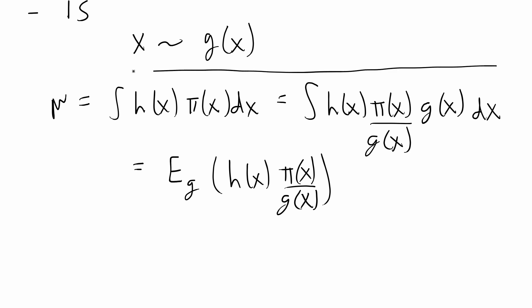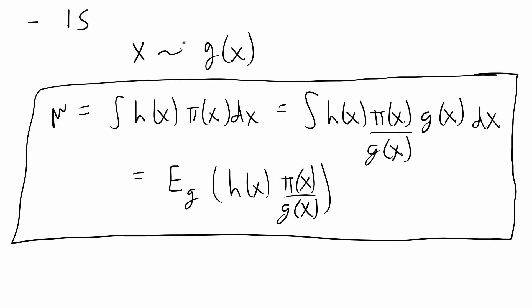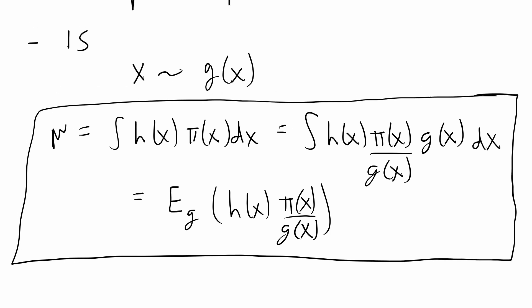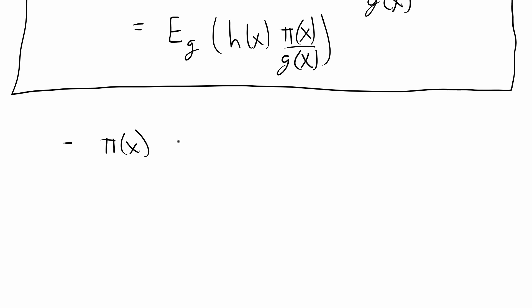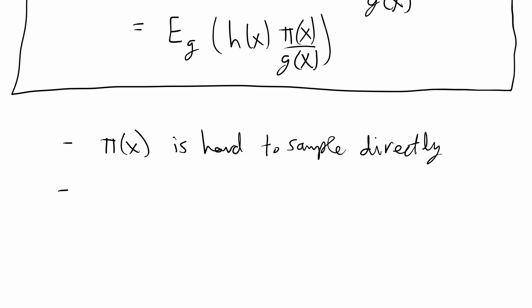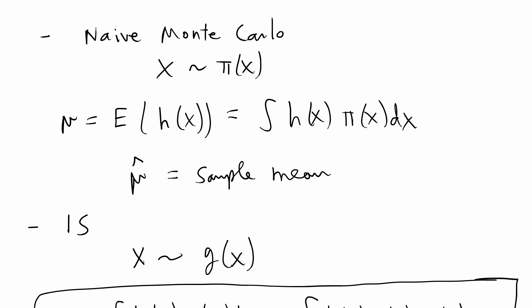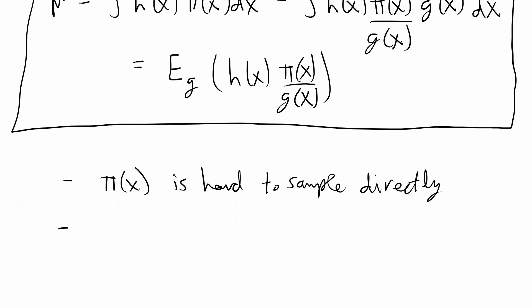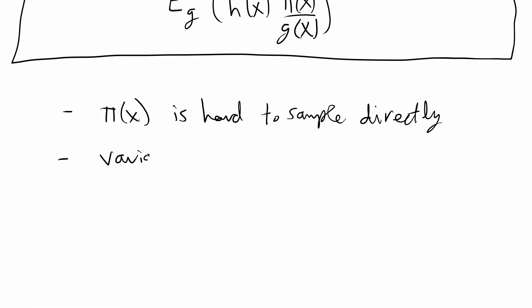This formula is basically importance sampling in a nutshell. If you know this, you know enough to write an importance sampling algorithm to estimate properties of a target distribution. The reasons for using importance sampling — creating a proposal distribution and sampling from it instead of your target — could be that the target distribution is hard to sample from directly, or another common reason is variance reduction. Using importance sampling instead of naive Monte Carlo gives you an estimator with smaller standard errors and sometimes better accuracy.